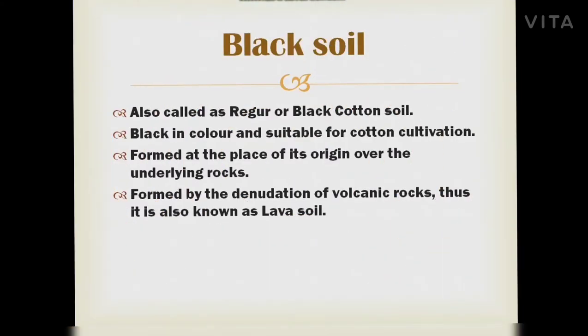Now we will study black soil. It is also called Regur soil, derived from the Telugu word 'Raguda' meaning lava. It is called black cotton soil because it is black in color and suitable for cotton cultivation. It is formed at the place of its origin over underlying rocks by the denudation of volcanic rocks, and is thus also called lava soil.